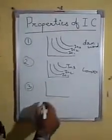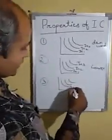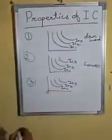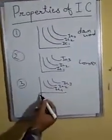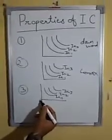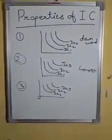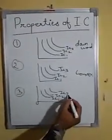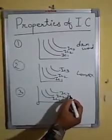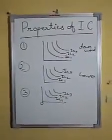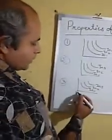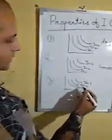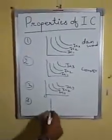Third property is that the more an IC curve is from the point of origin, the more will be the level of satisfaction. This means IC3 yields more satisfaction in comparison with IC1, because IC3 is further away and has a greater distance than IC1.